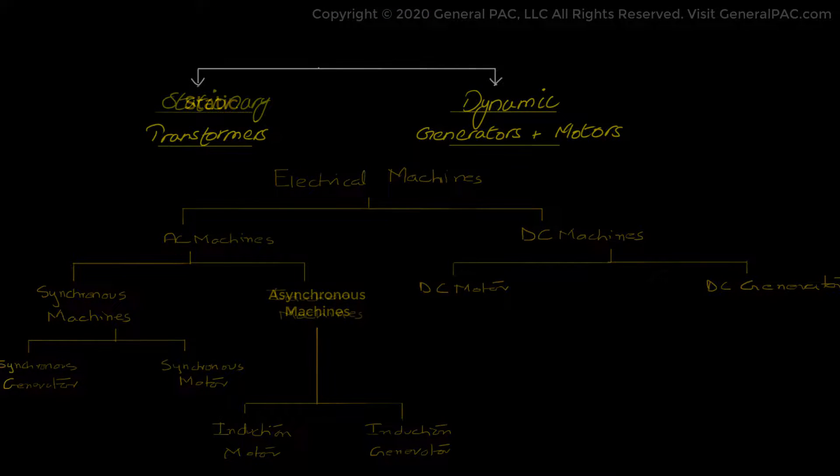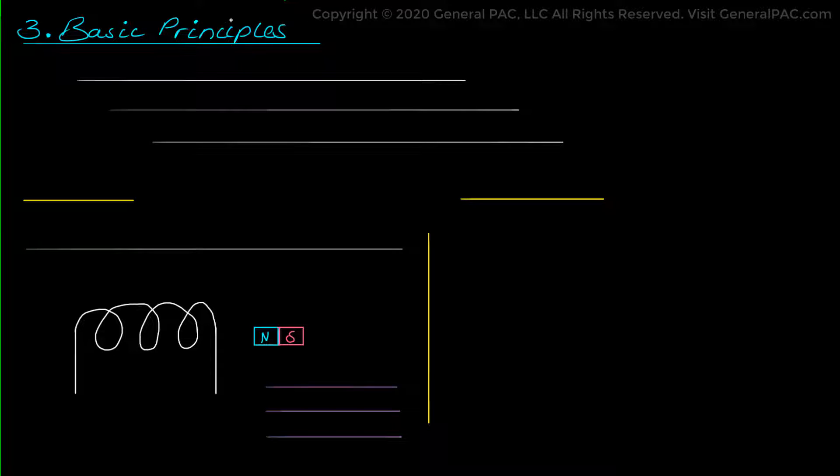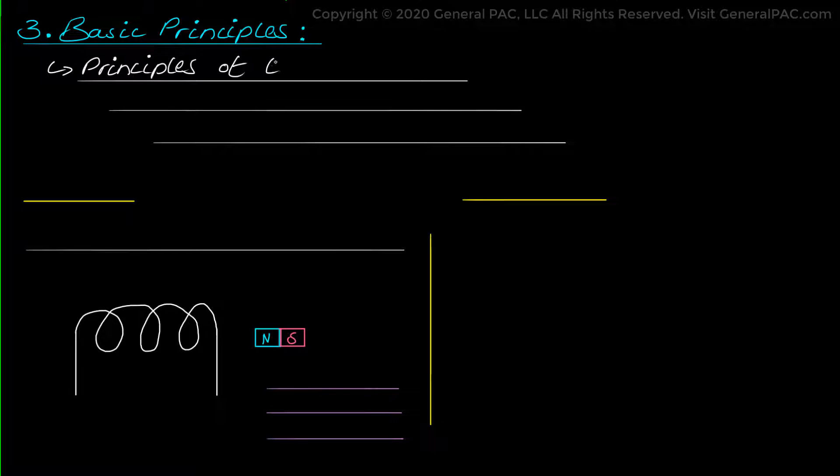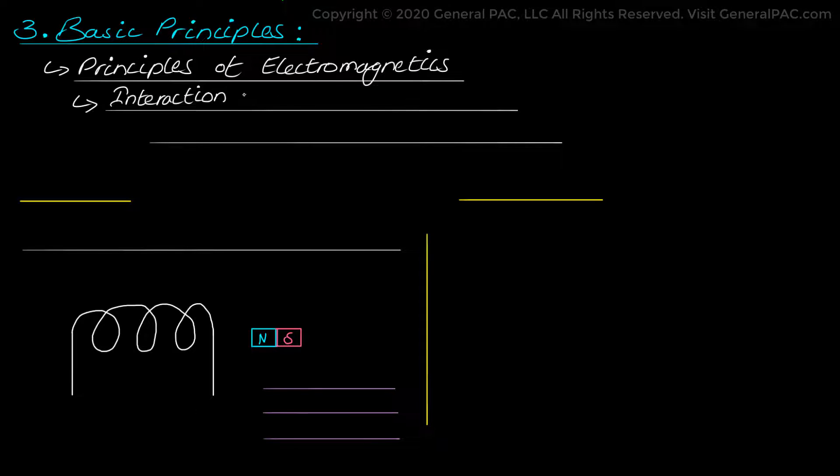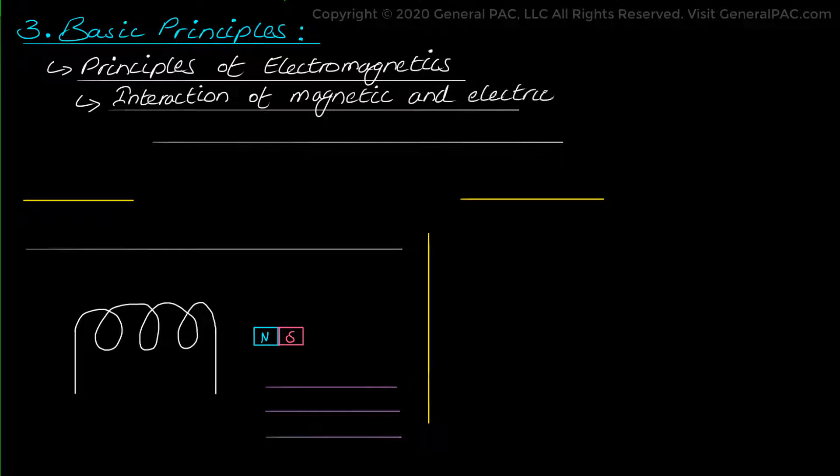Now let's see what are the basic principles involved in electrical machine operation. As we have discussed that machines convert electrical energy to mechanical energy and vice versa, the principles of electromagnetism are applied. In fact, it is an interaction of magnetic fields and electric field and its surroundings, which leads to the conversion of energy from electrical to mechanical and vice versa. And this effect is called electromagnetic induction.